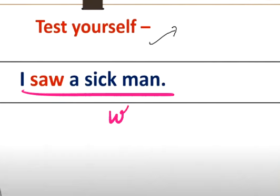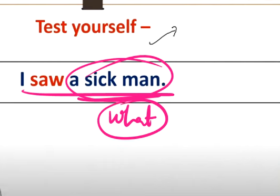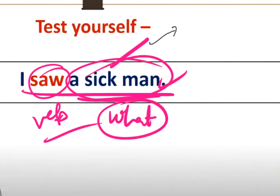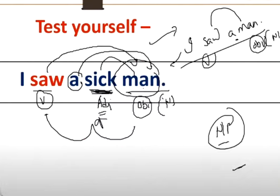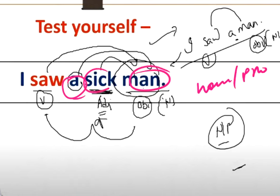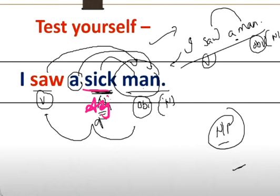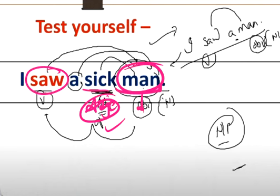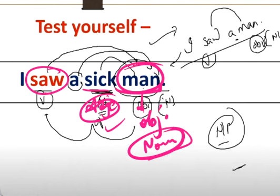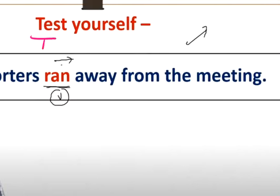So what is an object? 'I saw a sick man' - I saw what? A sick man. So the verb object: we ask 'what' - the answer is 'sick man'. But wait - object is always a noun or pronoun, so here 'sick' is an adjective, not the object. Here 'I saw what? Man' - 'man' is the object because it is a noun. In this sentence, 'man' is the object of the verb.